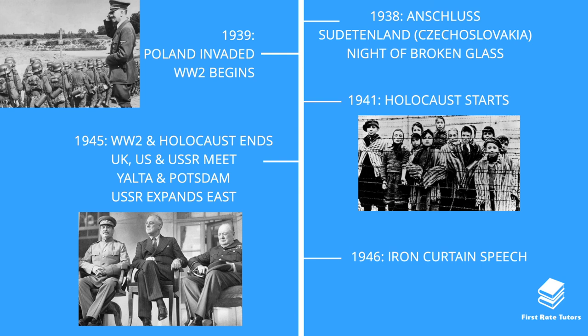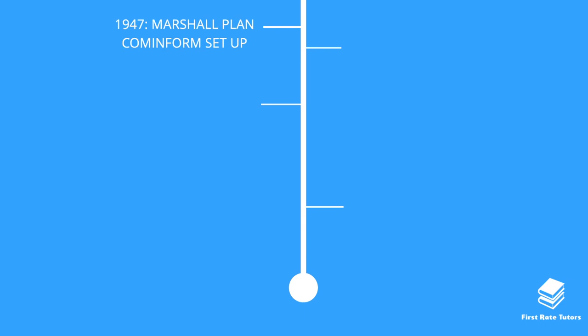By 1946 it became clear that Stalin would not honor the agreements made at Yalta and Potsdam — he would not allow free and fair elections in the countries the USSR occupied. Winston Churchill made a rousing speech called the Iron Curtain speech, accusing Stalin of drawing a division between eastern and western Europe — what he called, as a metaphor, the Iron Curtain.